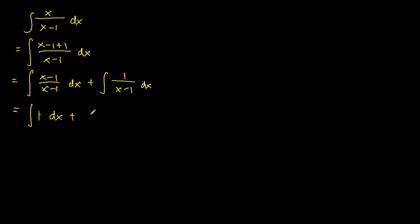While the second integral, we just let it as it is, and we perform the integration. So the first integral would end up being x, while the second integral would end up being ln absolute x minus 1 plus c.